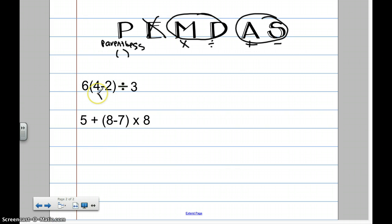4 minus 2. I'm going to do my parentheses first. 4 minus 2 is 2. Then, I have to multiply 6 times 2. This right here, because there's nothing there, means multiply. So, 6 times 2 equals 12.